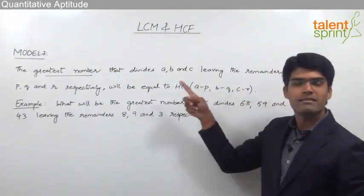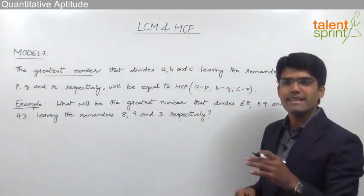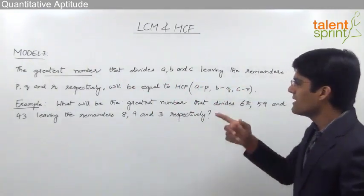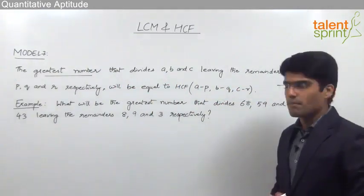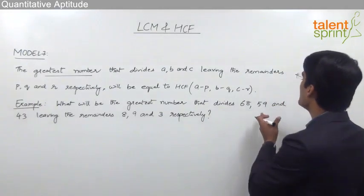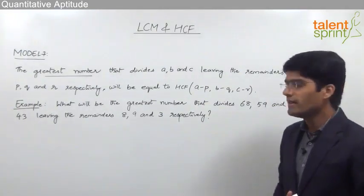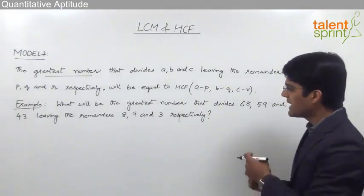Let us take an example to understand this concept. The question here is: what will be the greatest number that divides 68, 59, and 43 leaving the remainders 8, 9, and 3 respectively?